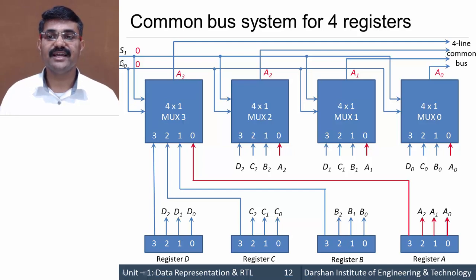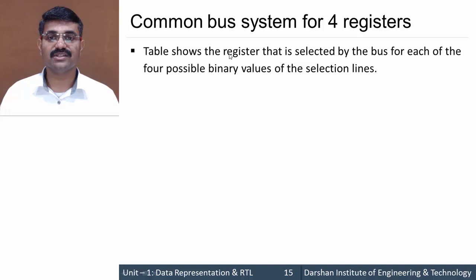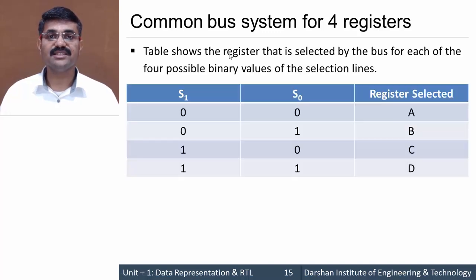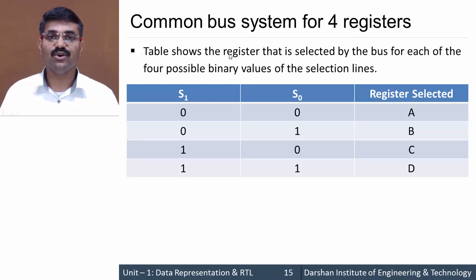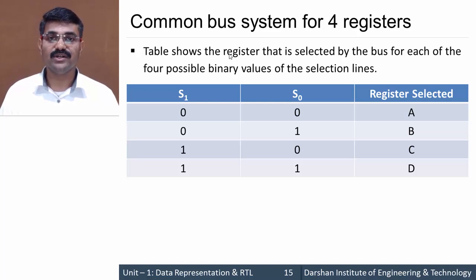By changing the select lines we can select different registers. From the function table: if S1 S0 = 0 1, then Register B is selected; if S1 S0 = 1 0, Register C is selected; and if both are 1, Register D is selected.